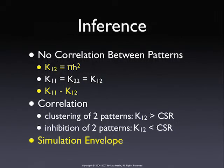Regarding spatial randomness: the pi H squared result also applies to a bivariate pattern if there is complete spatial randomness in both patterns. If shootings are completely spatially random and liquor stores are completely spatially random, then all these K-functions are the same — the K-function for liquor stores, for shootings, or the cross-K-function — they should all equal pi H squared. One way to test randomness is to take the difference between them, which should be zero.